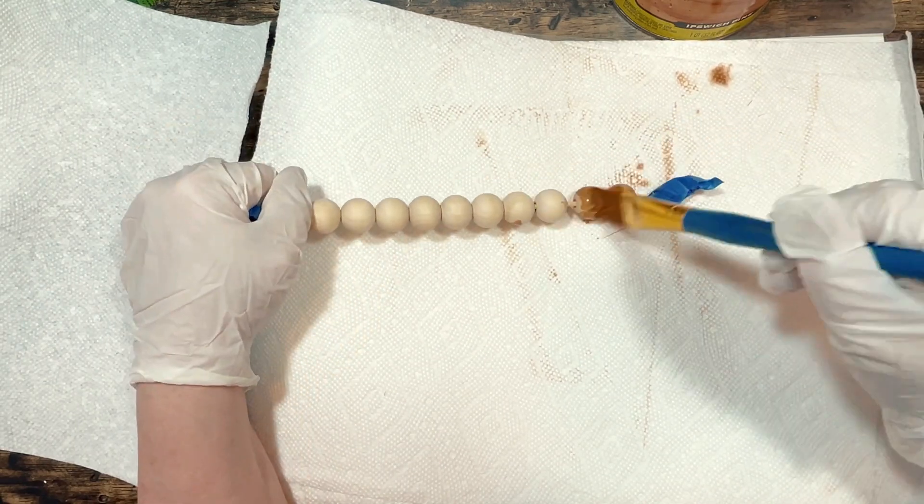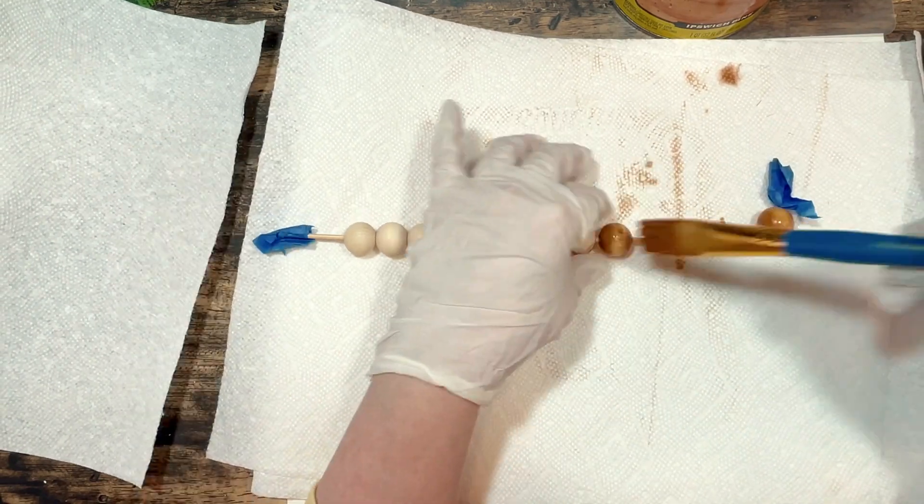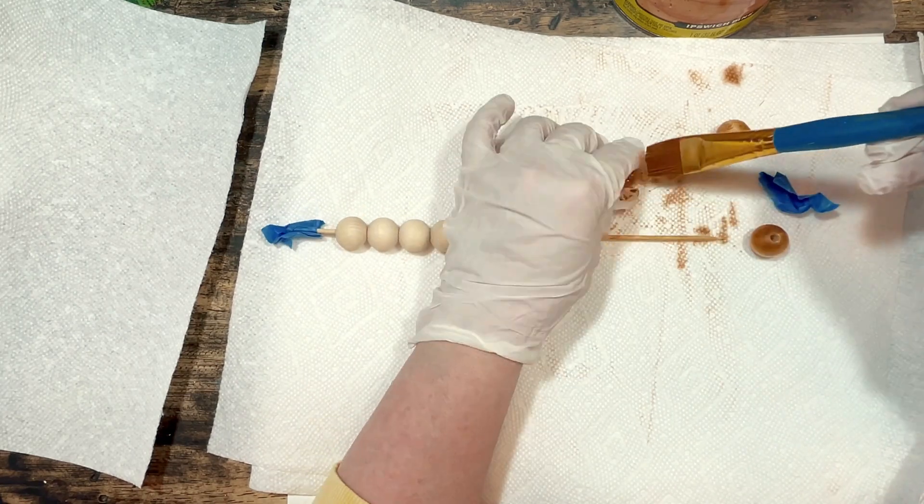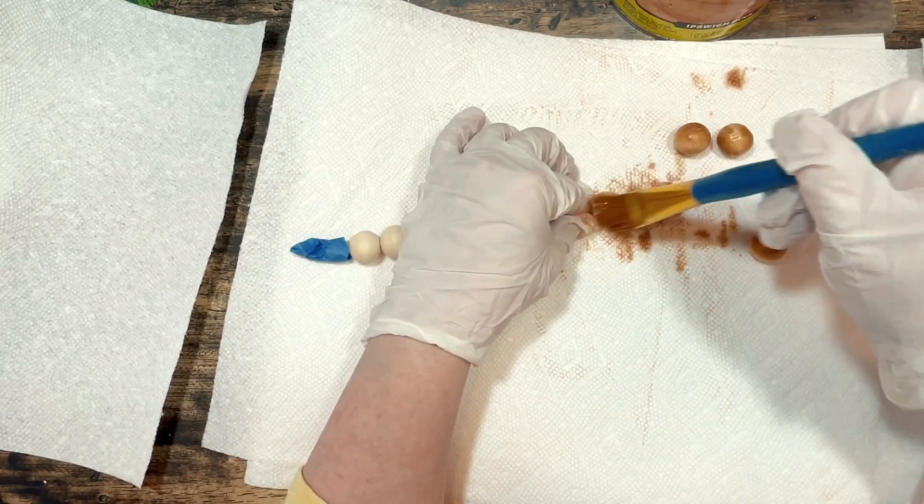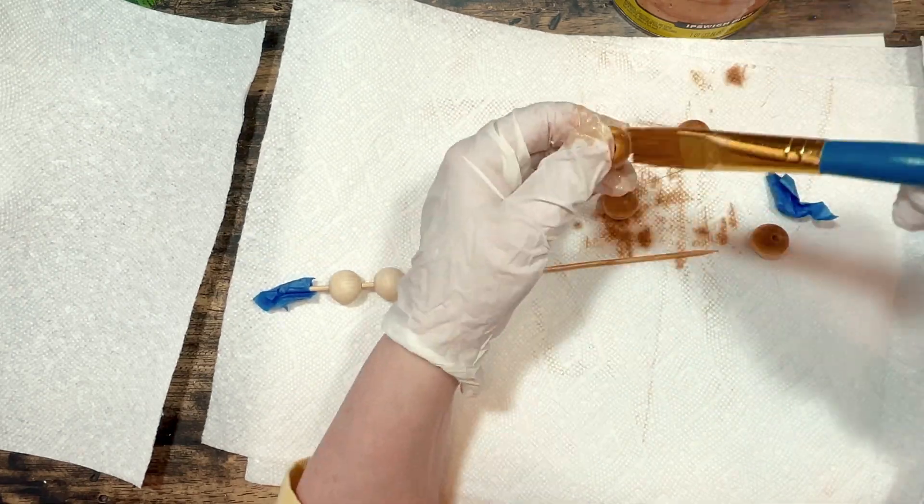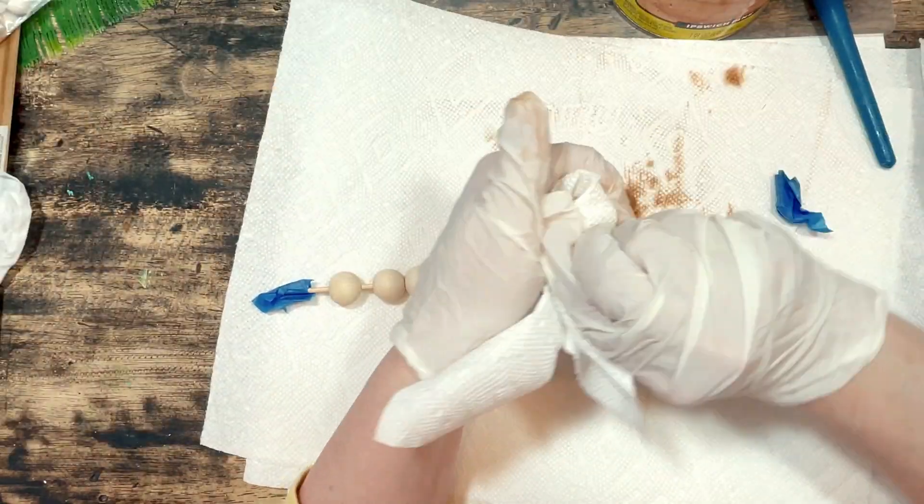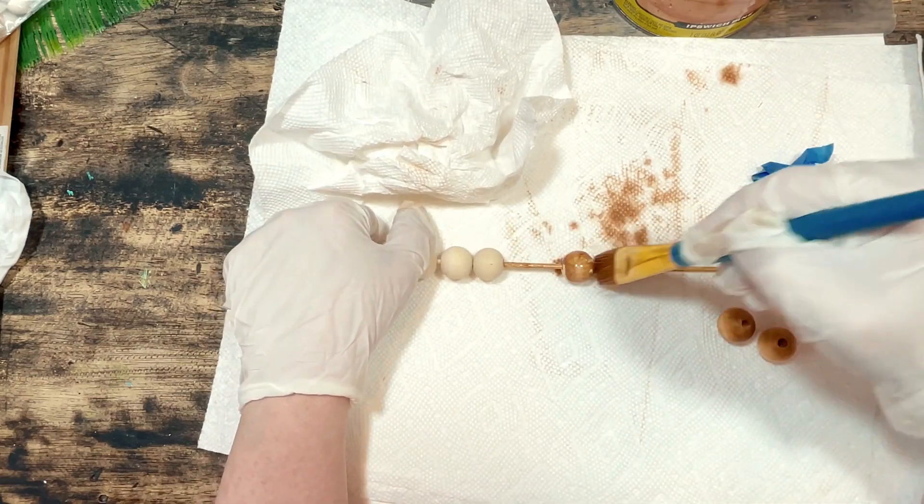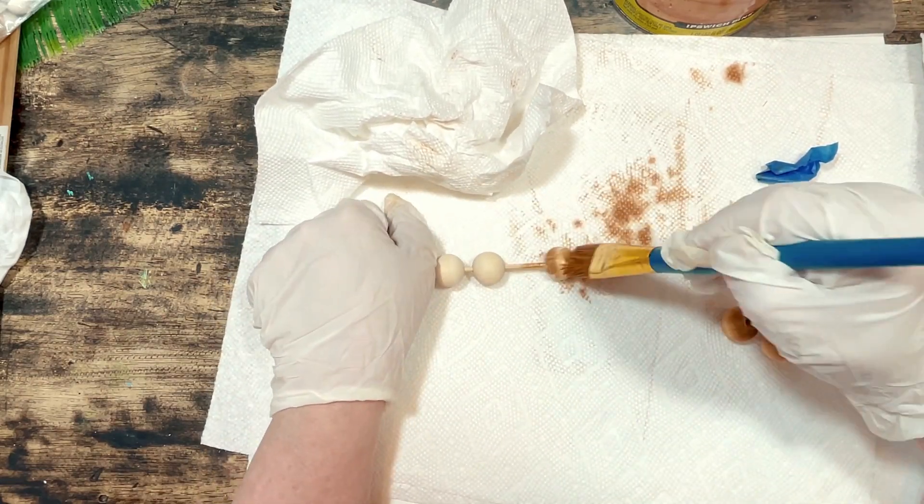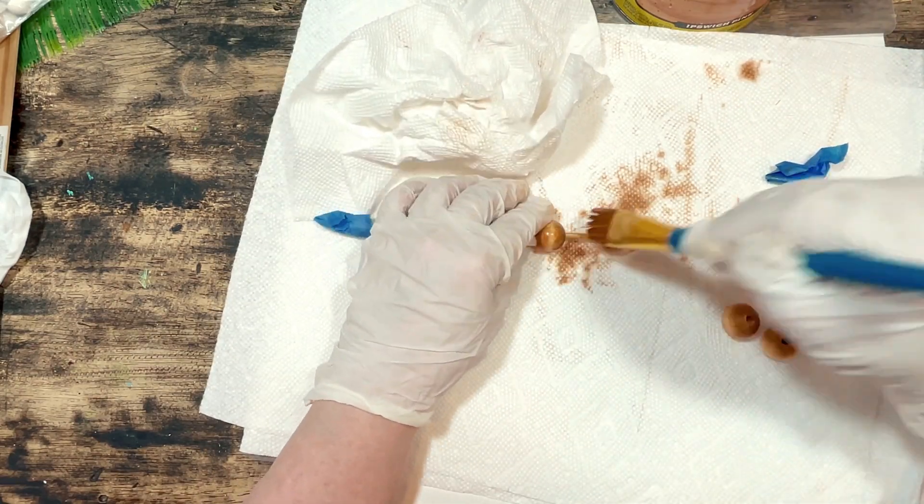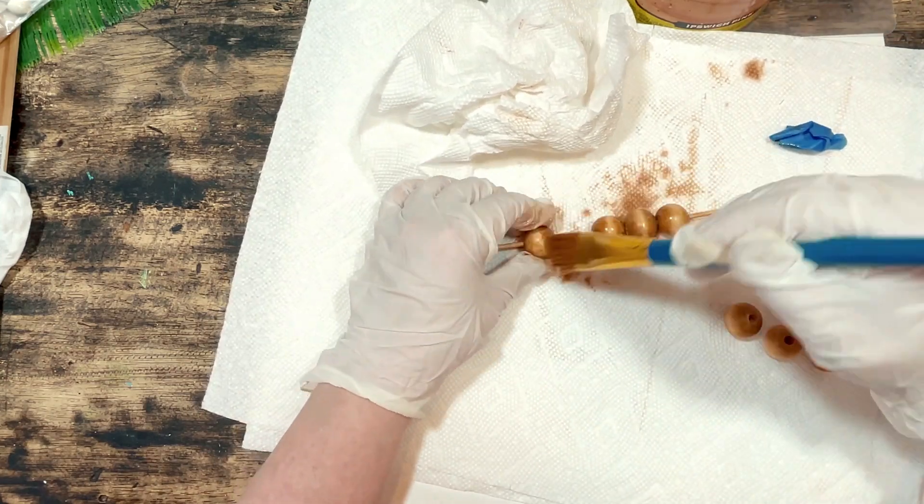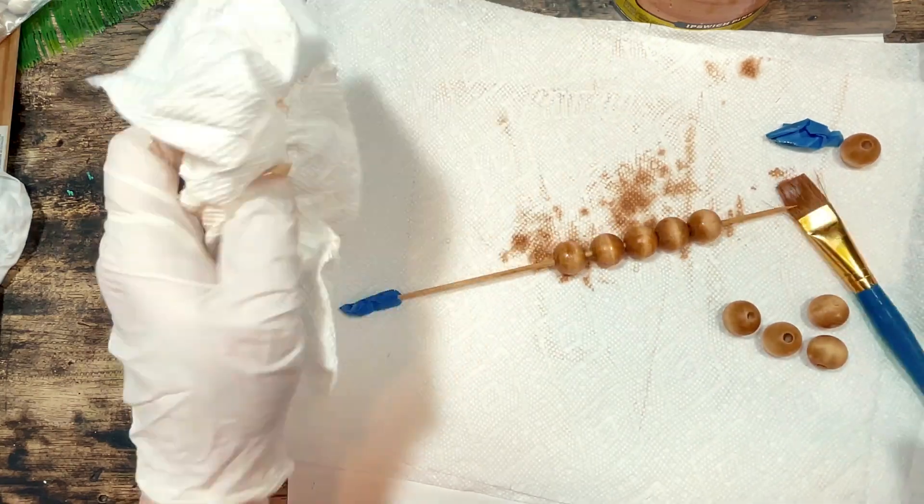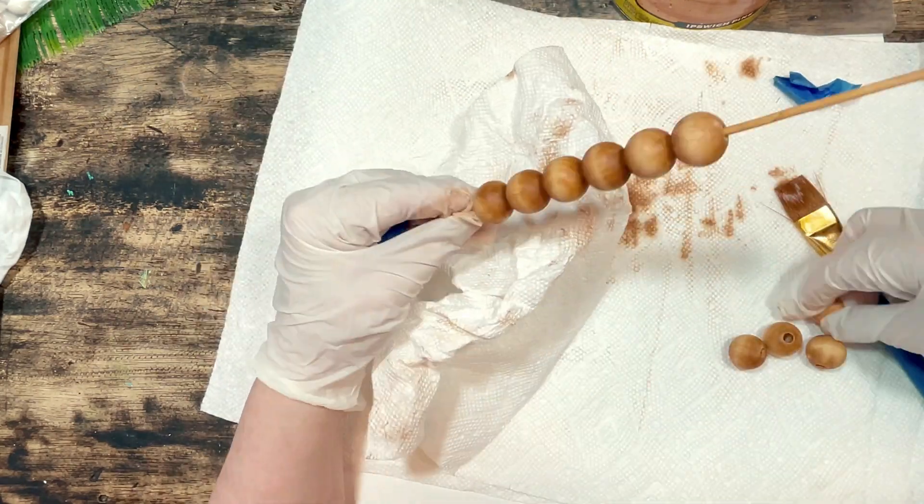Initially I figured the easiest way to stain the beads was to string them on to these Dollar Tree skewers and then I tape the ends of the skewers so that the beads won't slide off of them but I did end up taking a lot of the beads off the skewers to finish staining them because it was just easier to get the color onto them from all different angles when they were off the skewers. I also used paper towels to wipe off the extra stain before I set all my pieces aside to fully dry overnight.